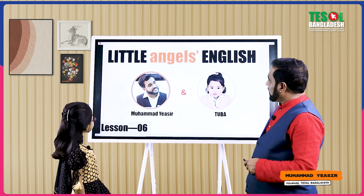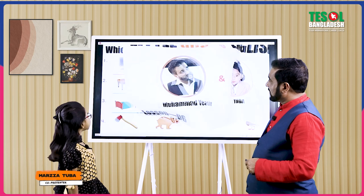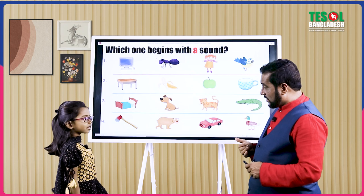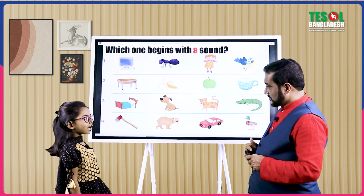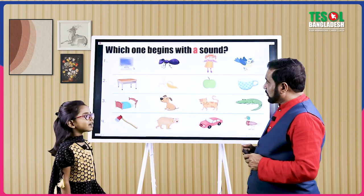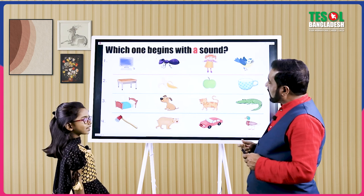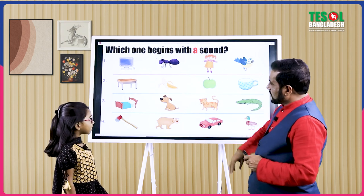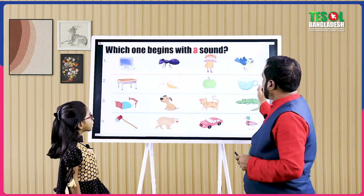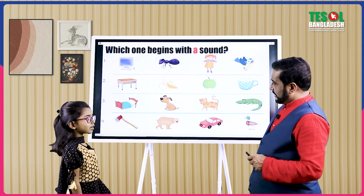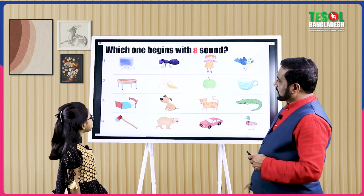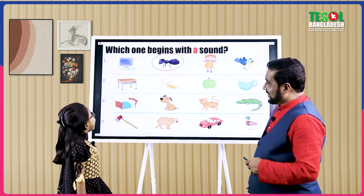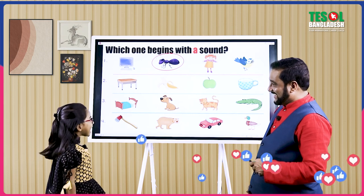So, here you go. Tuba, what do you learn? Which one begins with A letter or A sound? You got it? A sound. Now Tuba, the first row you see — there are four pictures. Which of these four pictures begins with A sound? And. Are you sure? Yeah. Let's see. Yeah, you're right.